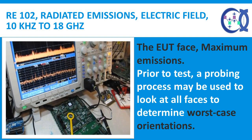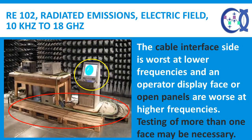The standard indicates that testing should be accomplished on the EUT face with maximum emissions. Prior to test, a probing process may be used to look at all faces to determine worst-case orientations. Frequently, the cable interface side is worst at lower frequencies, while an operator display face or open panels are worse at higher frequencies. Testing of more than one face may be necessary.